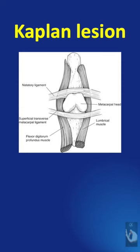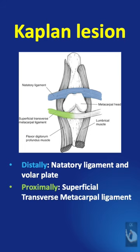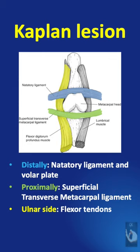Closed reduction is not possible because of the noose mechanism: the natatory ligament distally, the superficial transverse metacarpal ligament proximally, and the flexor tendons on the ulnar side and lumbrical muscle on the radial side.